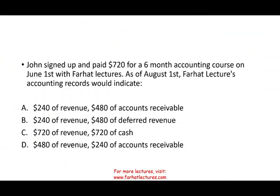So let's take a look at this first question. John signed up and paid $720 for a six-month accounting course on June 1st with Farhat Lectures. As of August 1st, Farhat Lectures' accounting record would indicate what? When John signed up and paid for a six-month accounting course, Farhat Lectures will debit cash $720 and credit deferred revenue or unearned revenue $720, because John is going to be consuming this course over a six-month period.